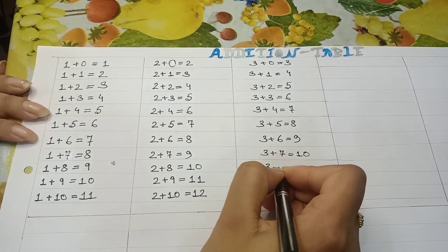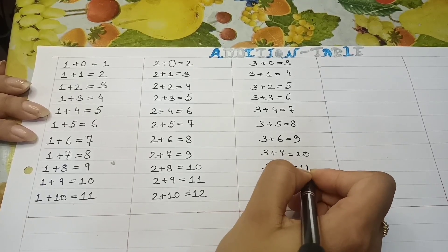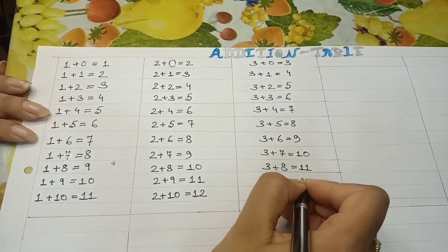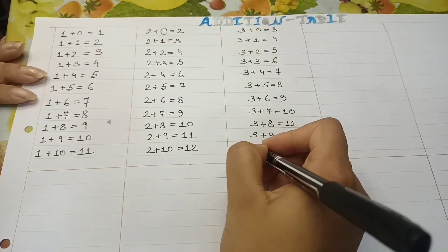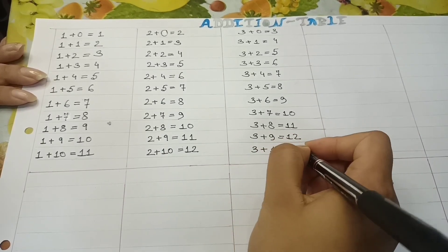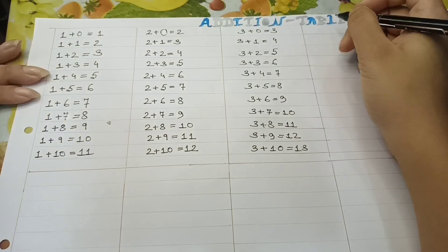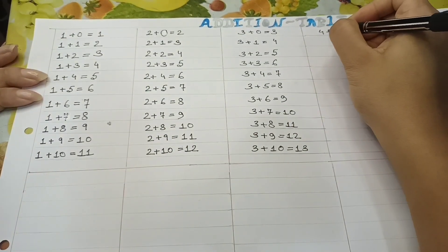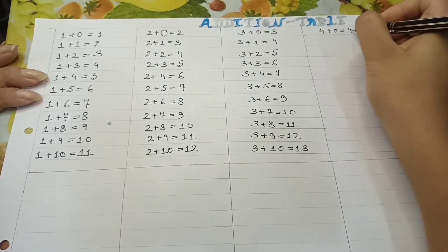3 plus 8 is equal to 11. 3 plus 9 is equal to 12. 3 plus 10 equal to 13. Next, 4 table. 4 plus 0 is equal to 4.